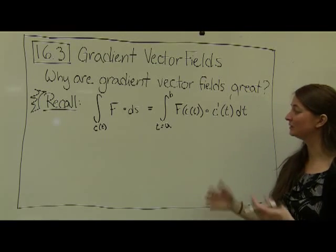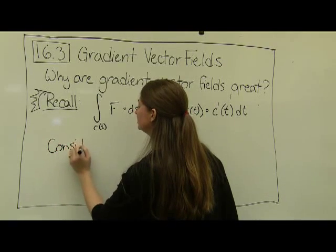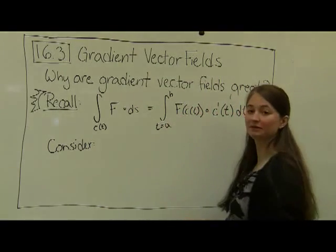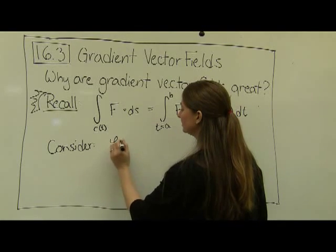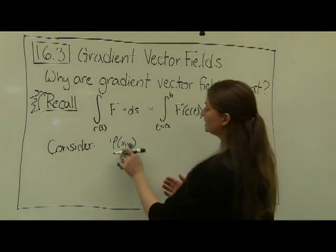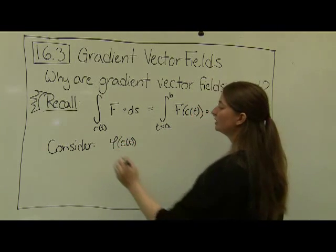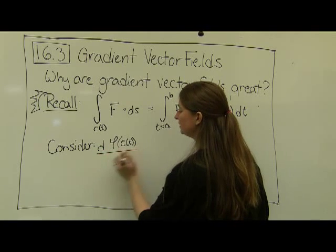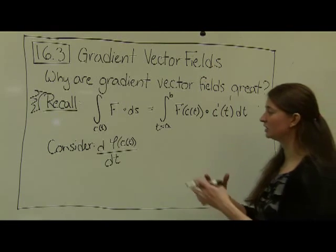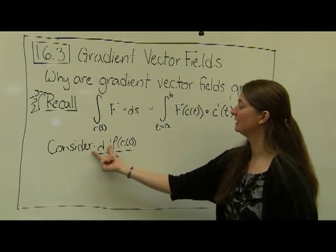The cool thing we're going to tie together today is this: let's take our phi function — let's say that F is a gradient vector field — and look at phi(x,y), plugging in c(t) into that function along the same path. I want to look at what is the derivative of this phi function with respect to t. I'm taking my potential function, plugging in this path, and taking the derivative.